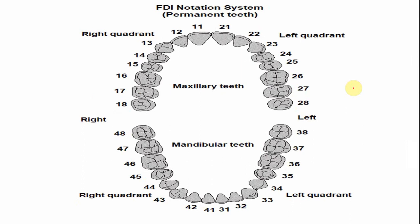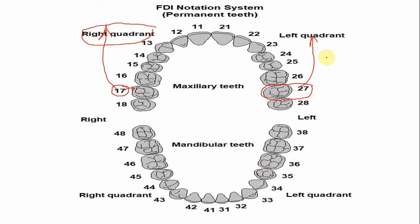In the FDI notation system, the right maxillary second molar is numbered 17 — here '1' indicates the right upper quadrant and '7' indicates the second molar. Similarly, on the left side, the left maxillary second molar is numbered 27 — '2' indicates the left maxillary quadrant and '7' indicates that it is the second molar.